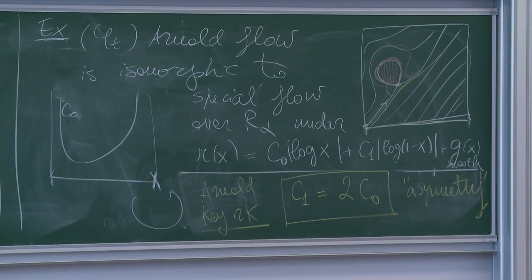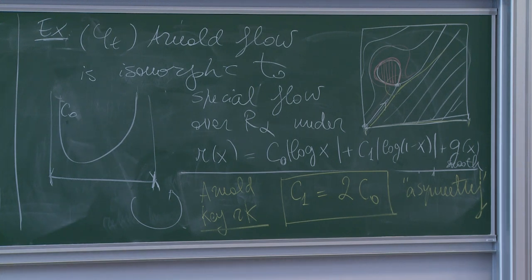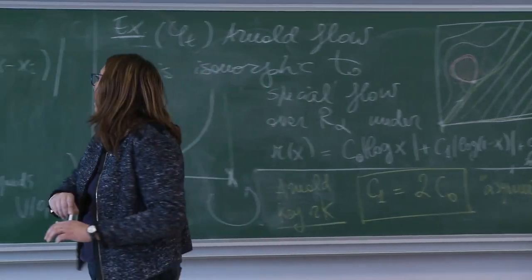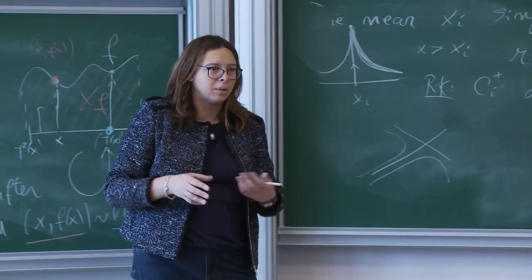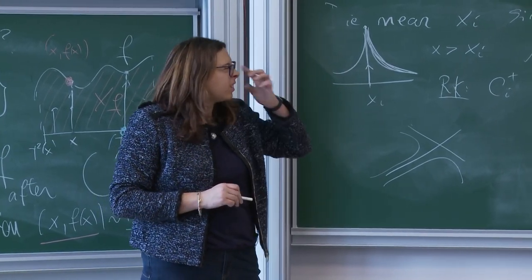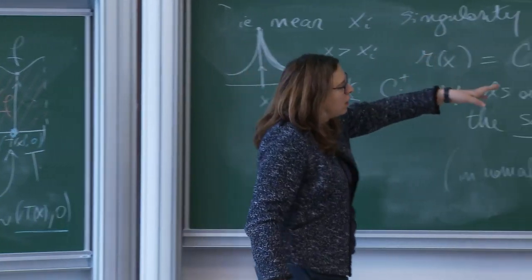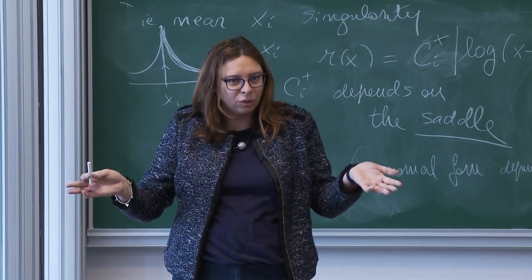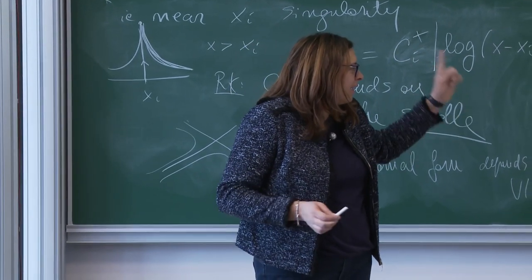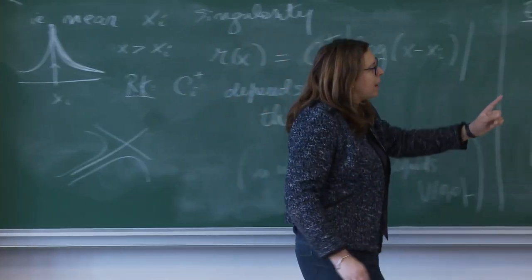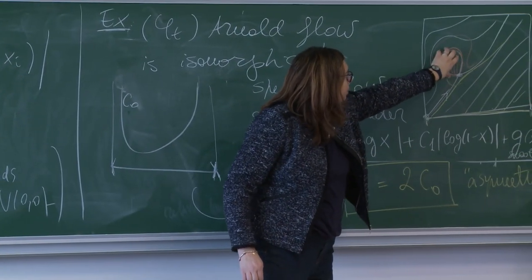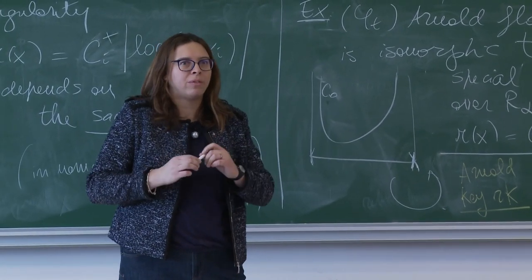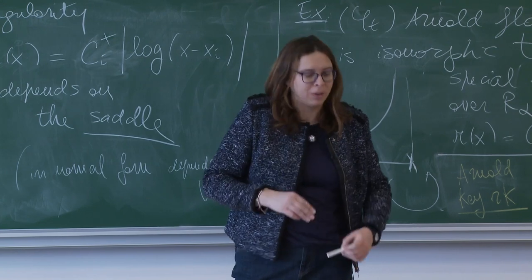After a five-minute break, I will state the precise theorems I was mentioning and start explaining the mixing mechanism. What is important so far: we have the special flow representation. We did it for the Arnold flow. After the break, we'll write the general picture for higher genus flows and minimal components. Key point: Arnold remarked that saddle loops — these traps — introduce asymmetry in the return time singularities.